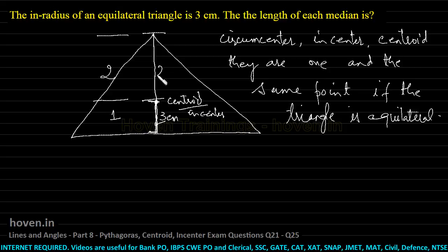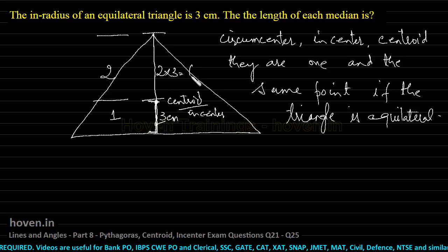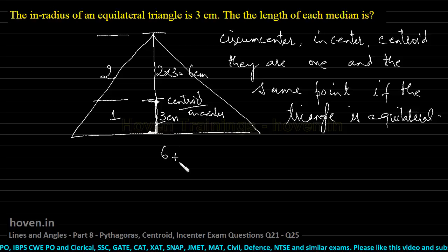So this will be 2 into 3 equal to 6 cm. And therefore, the length of the entire median will be 6 plus 3 equal to 9 cm.